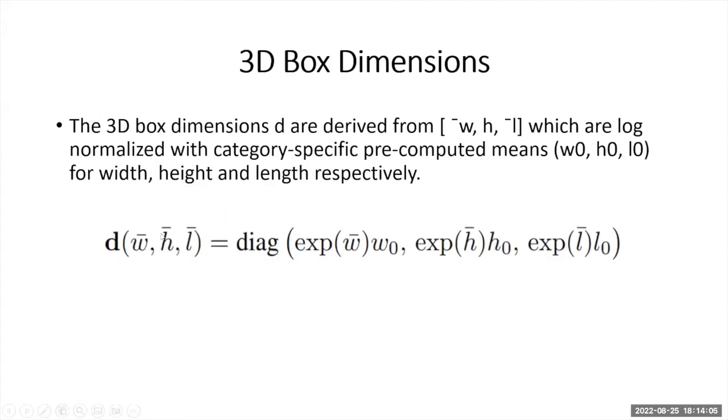We need dimensions for the 3D cuboid boxes for the detected 2D objects. The dimension of the 3D cuboid box is found using this equation where w, h, l are width, height, and length respectively. w0, h0, l0 are the pre-computed means that need to be incorporated into this equation.